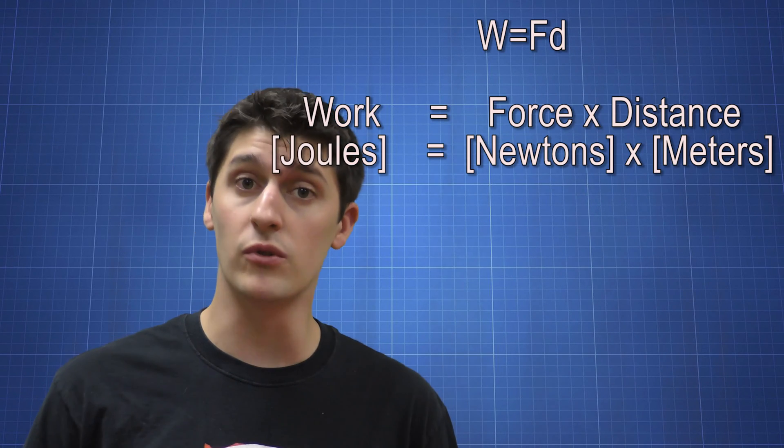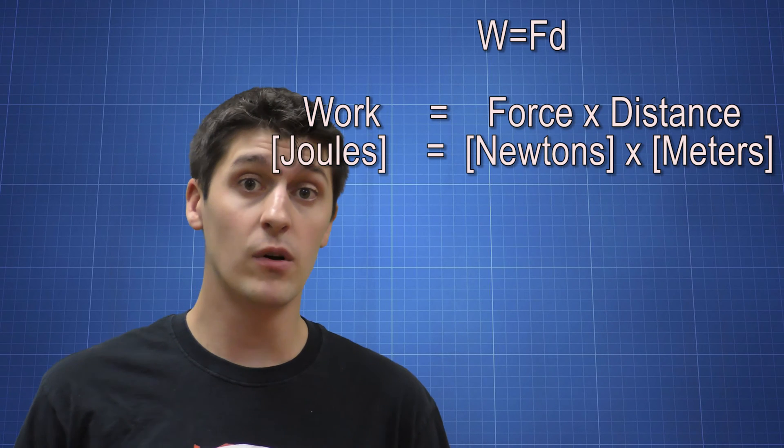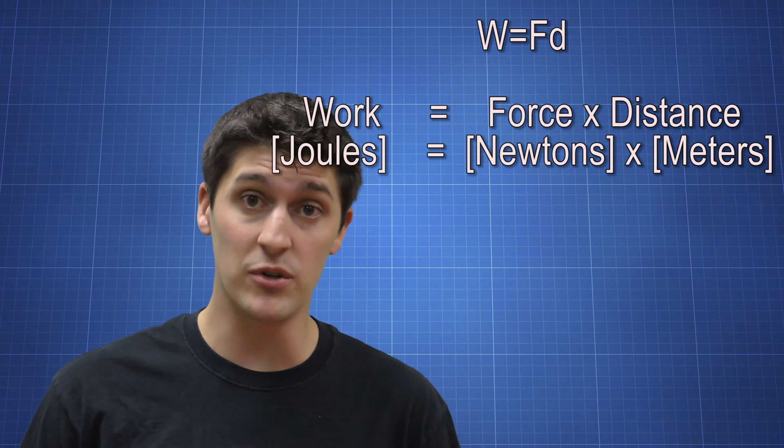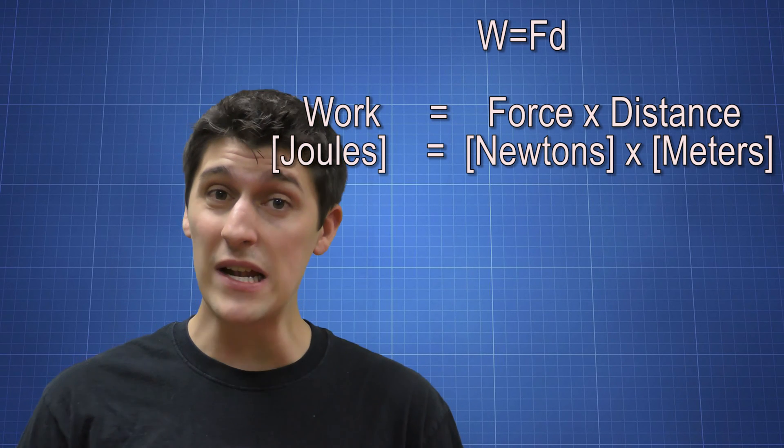Our equation for work is W equals F times D, or work is equal to force times distance. We saw this in simple machines, but we're going to take a look at it again.